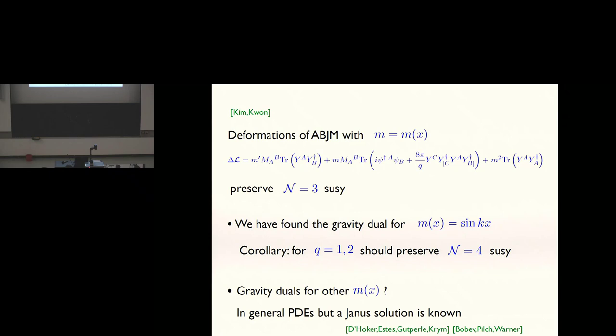There's some scalars in the four representation. This is a mass term for the scalars. This is a delta is one operator. There's some fermions also transforming in a four of SU(4). This is a delta is two operator and supersymmetry says you better correlate it appropriately like this. There was a paper by Kim and Kwon quite independently of the work that I've just been describing and they show that ABJM theory with an M-tree M of X where MAB is a matrix which has two positive eigenvalues and two negative eigenvalues and it's diagonal. This is exactly what we've constructed for the special value of M of X equals sine kX.